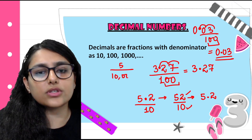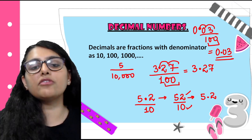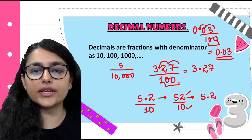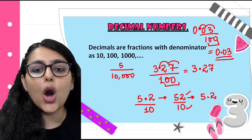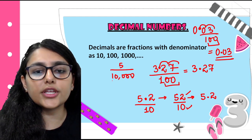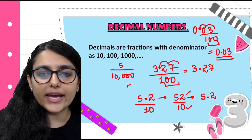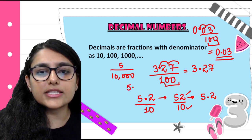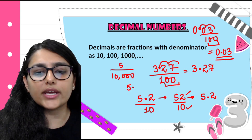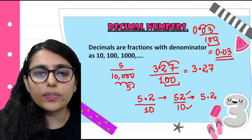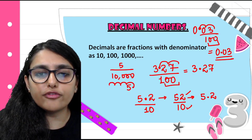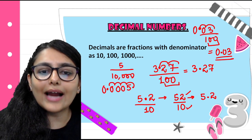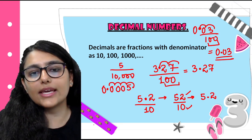Similarly, if I write 5 upon 10,000 — this is a fraction, and I need to convert it to decimal. Let's count the number of zeros: 1, 2, 3, 4. Now starting from the right of 5, I count 4 places: 1, 2, 3, 4. So I place 0, 0, 0, decimal, and 0. So the answer is 0.0005. Clear to everyone.